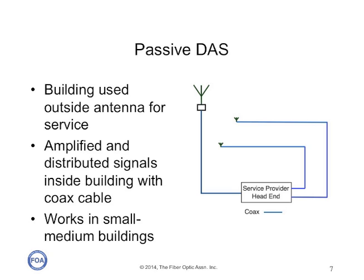Passive systems have been used in small and medium-sized buildings, up to 10,000 to maybe 200,000 square feet, for years, but are being replaced by active digital systems.